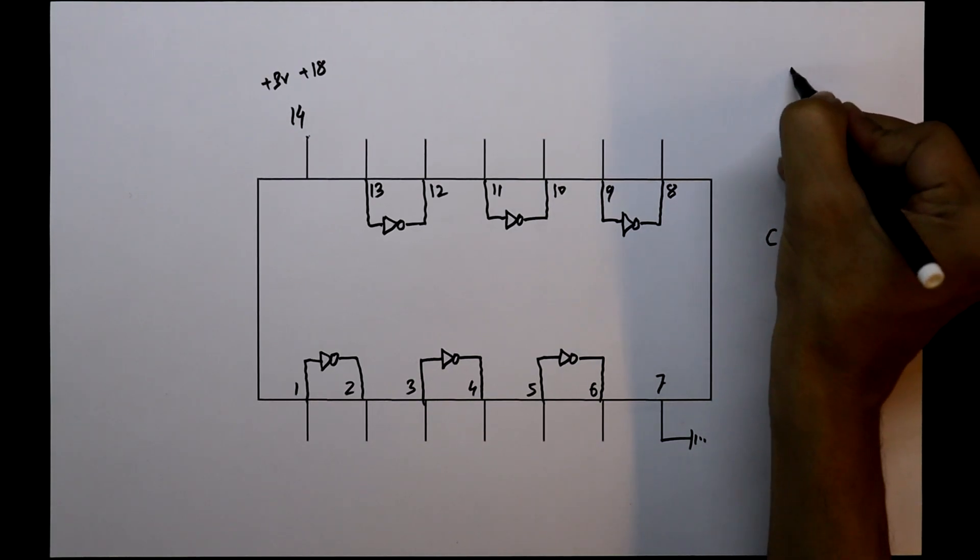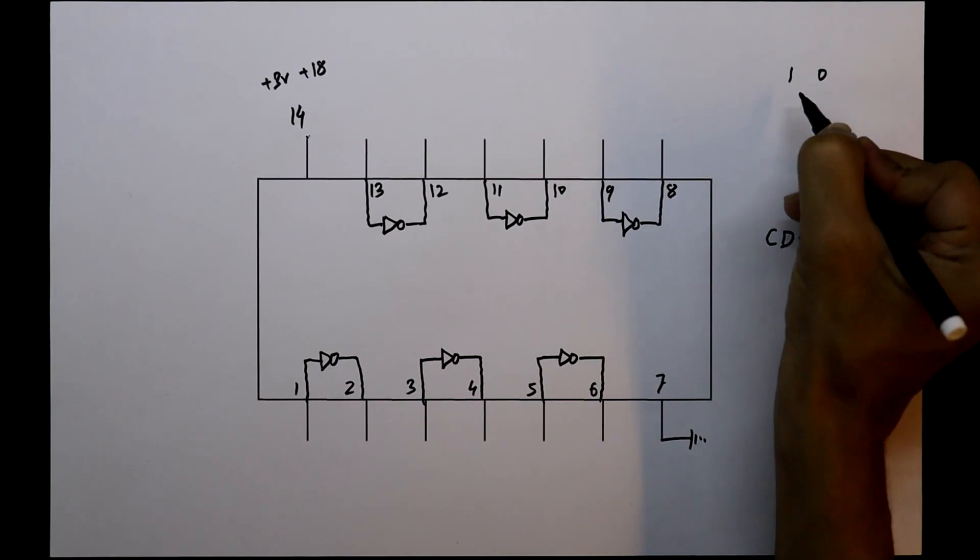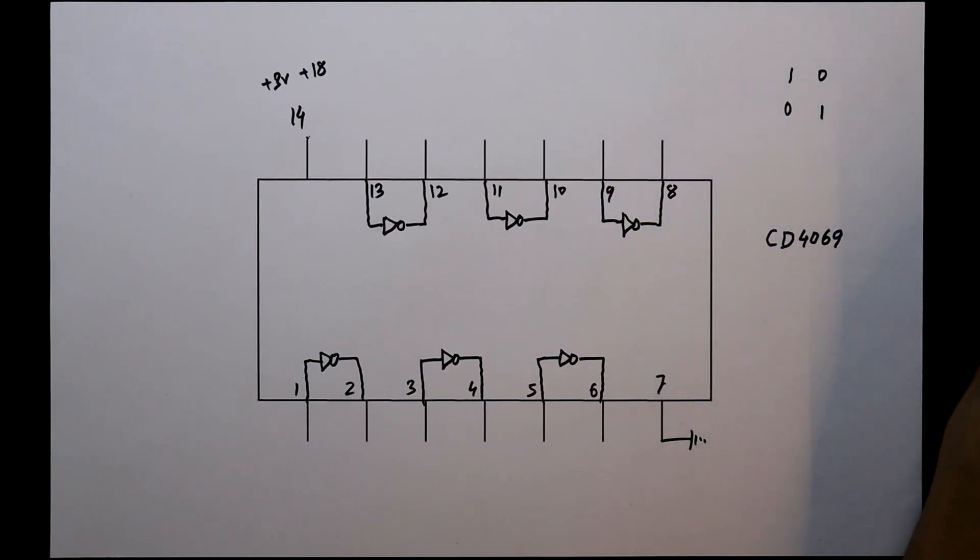If input is 1, then the output of the NOT gate will be 0, and if input is 0, then we'll get output as 1.